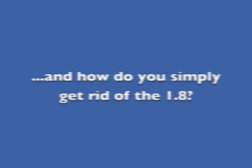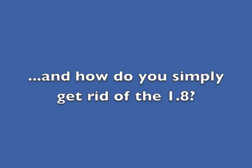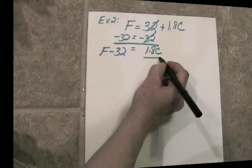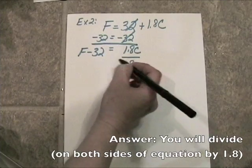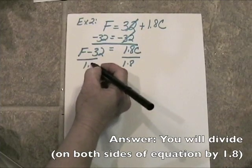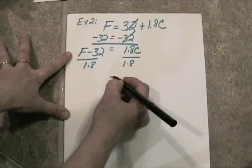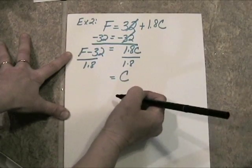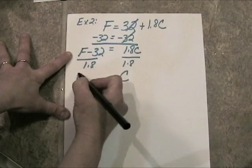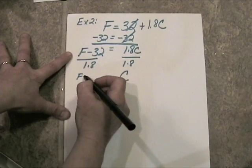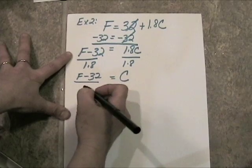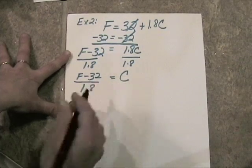So, we're almost there. All we have to do is get rid of the 1.8. So, to do that, we will divide on both sides of the equation by 1.8. So, there we have it. Celsius is always going to be equal to the Fahrenheit, take away 32 and then divide that result by 1.8.